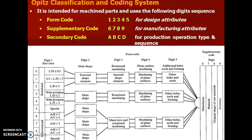Digit 1 discusses the part class. Digit 2 describes the main shape. Digit 3 covers the rotational machining aspect. Digit 4 addresses plain surface machining. Digit 5 covers additional holes, teeth, and forming required. Digits 6, 7, 8, and 9 form the supplementary code, describing the dimension, type of material, original shape of the raw material, and the accuracy required.